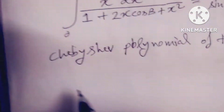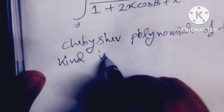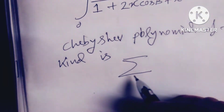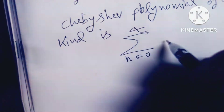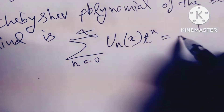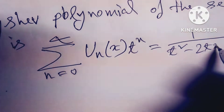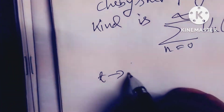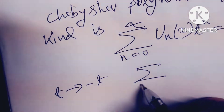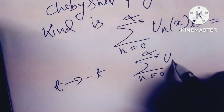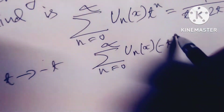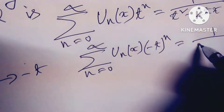The Chebyshev polynomial of the second kind is defined by the generating function: summation from n = 0 to infinity of U_n(x) · t^n equals 1 / (1 - 2tx + t²). When t tends to -t, we get summation n = 0 to infinity of U_n(x) · (-t)^n equals 1 / (t² + 2tx + 1).